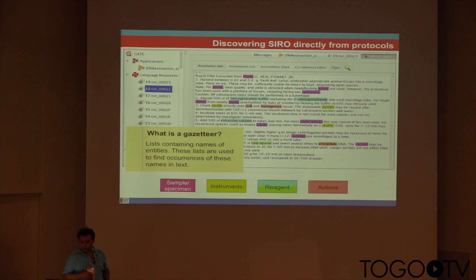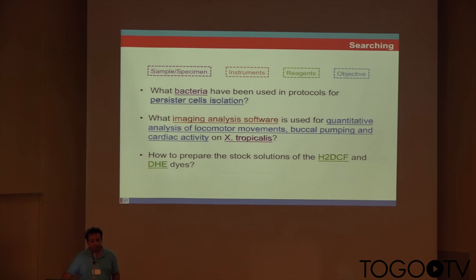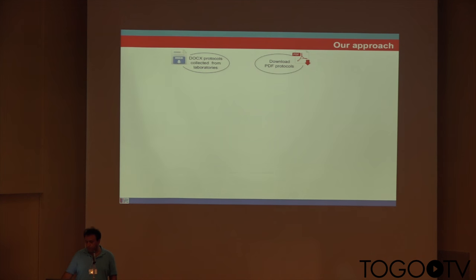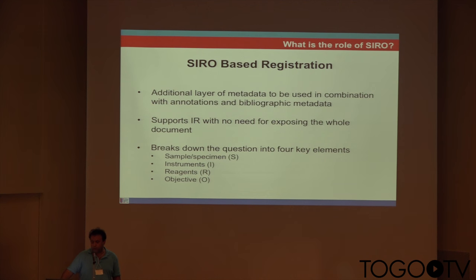This is our NLP layer. Using the minimal information model, we can now quite easily identify from a protocol the sample, instrument, reagent, and actions. For example, we can search for what bacteria have been used in protocols for a specific isolation procedure. We identify samples, specimen, instrument, reagent, and the objective of the actual protocol. We also support sample, instrument, reagent, and objective-based registration for protocols that already exist as published PDFs or for protocols created within our own platform.